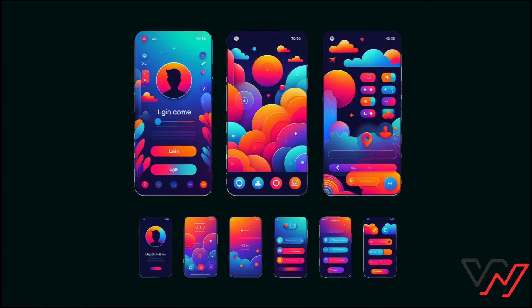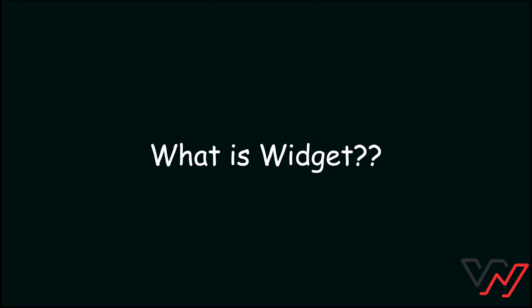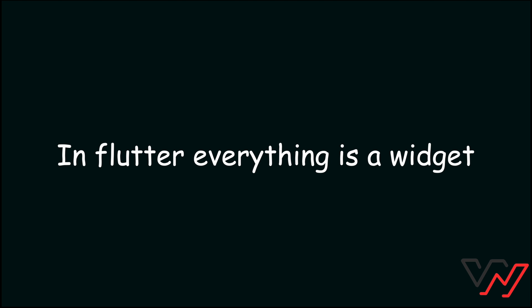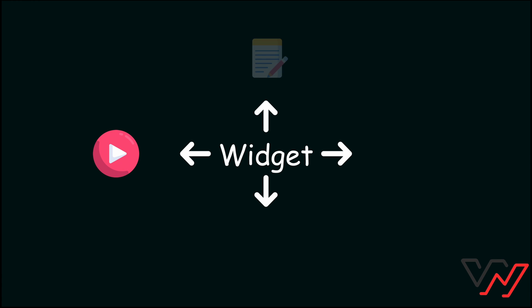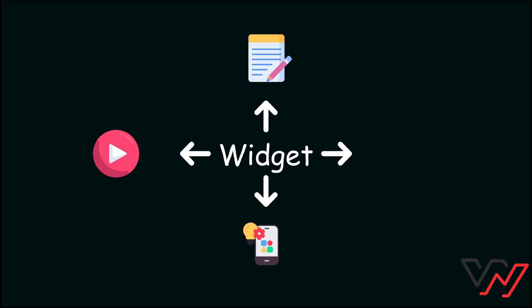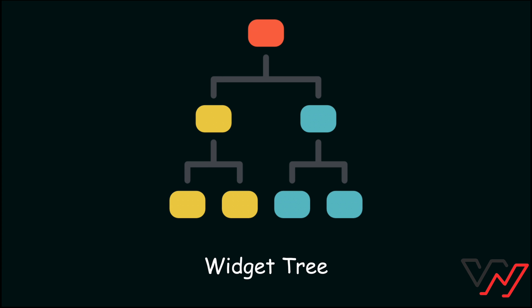To begin, let's define what a widget is in the context of Flutter. In Flutter, everything is a widget. Whether it's a button, text, image, or even the entire application itself, everything you see on the screen is a widget. Widgets in Flutter are arranged in a hierarchical structure known as the widget tree.